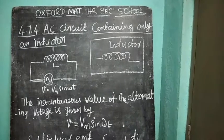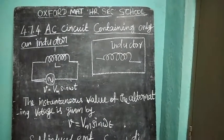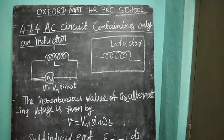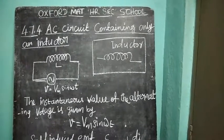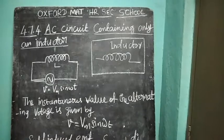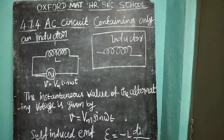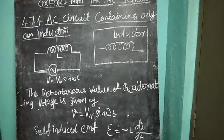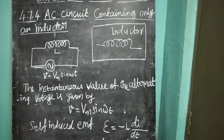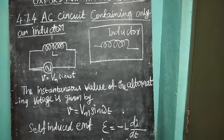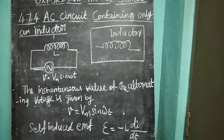Alternating current flows through the circuit, so current flows through the inductor. The inductor induces self-induced EMF or back-induced EMF. The self-induced EMF E is equal to minus L di by dt.